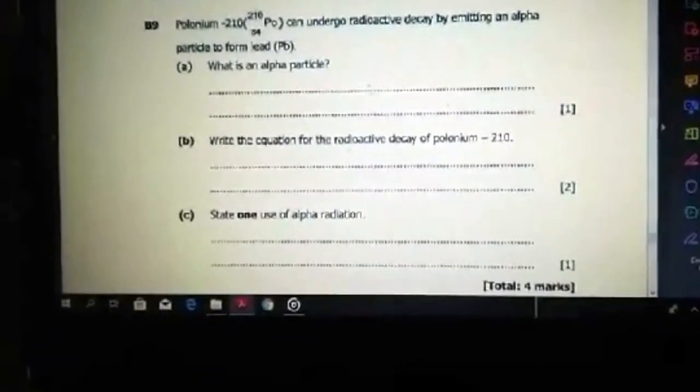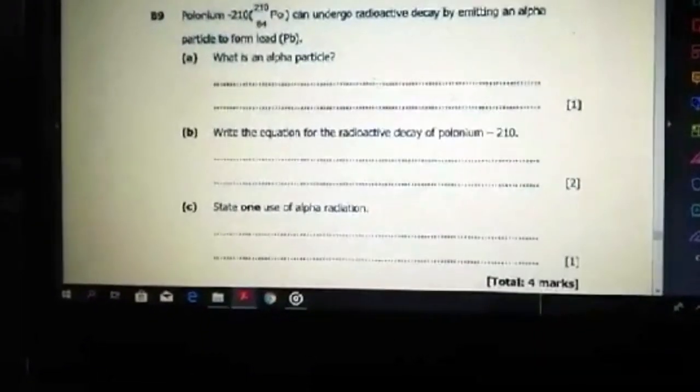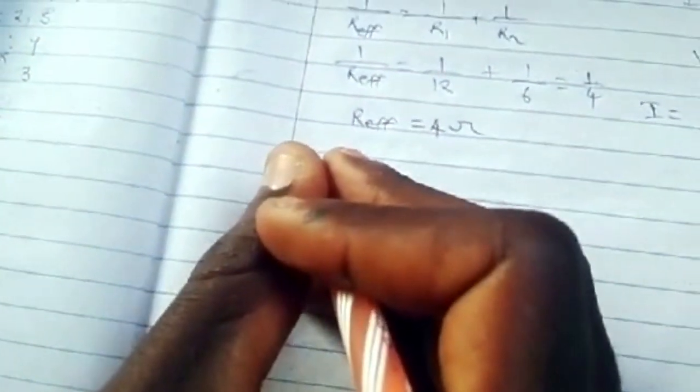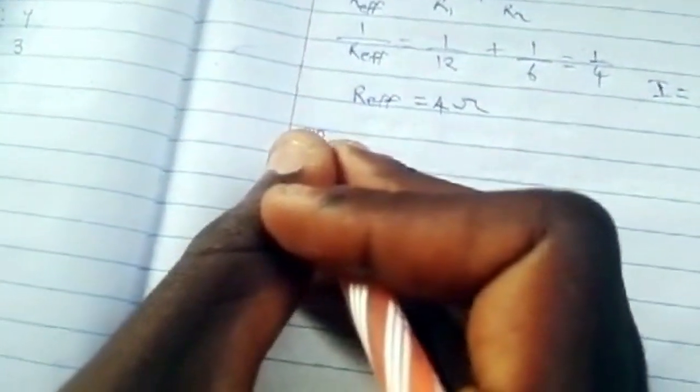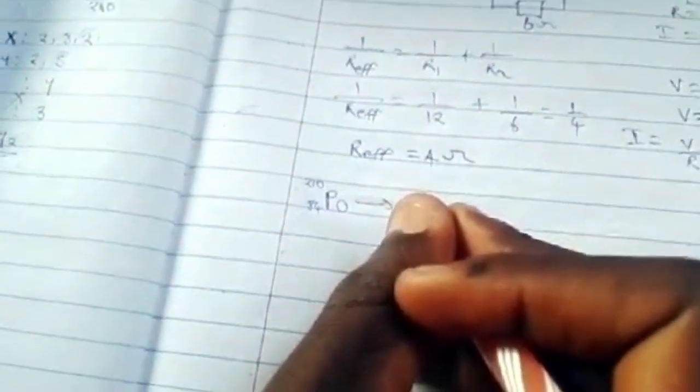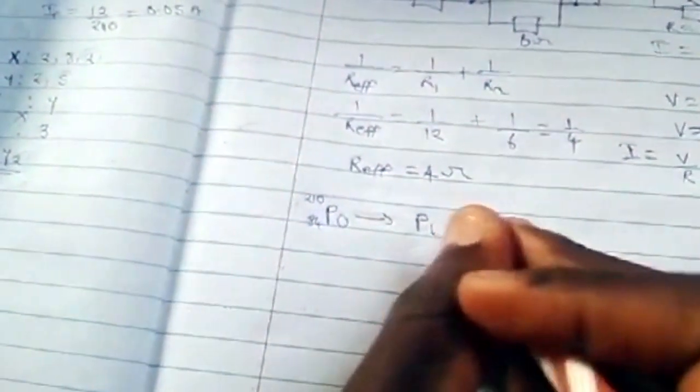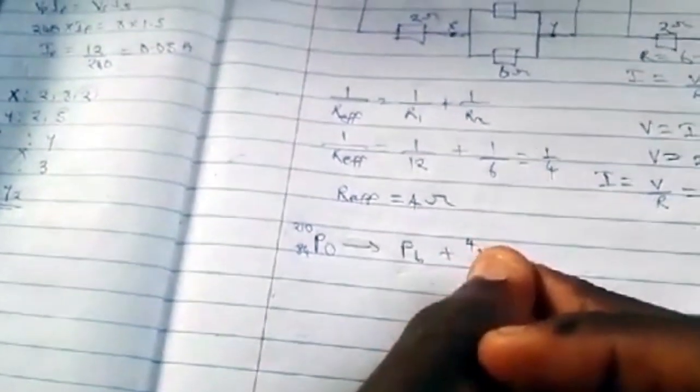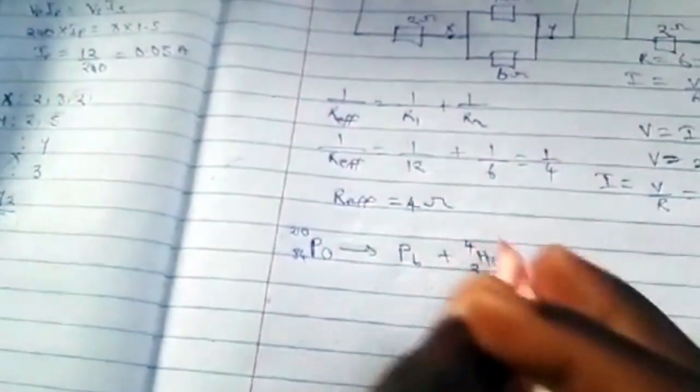Write the equation for the radioactive decay of polonium. If polonium decays, it's 210 and 84. It will decay into lead, which is Pb. First we find the atomic number and mass number of Pb. First we omit the alpha particle, which is 4, 2—this is the alpha particle which is helium in nature. If we subtract 4 from 210, it gives us 206. From here we subtract 2, it's 82.